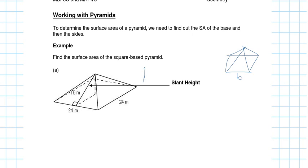There are two different heights here. The height of the pyramid goes from the top of the pyramid to the middle of the base. Then there's what we call the slanted height, which is the actual height of the triangle. You need to use the slanted height because the area of each triangle is slanted height times base divided by 2. Since there are 4 triangles, it becomes 4 times that, which simplifies to 2 times base times slanted height.